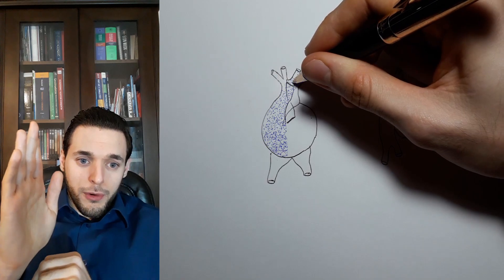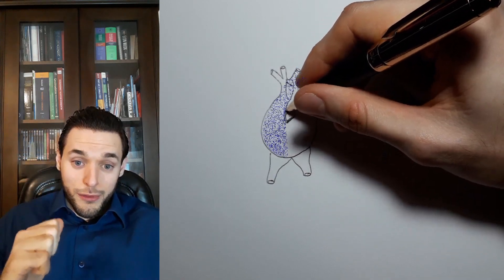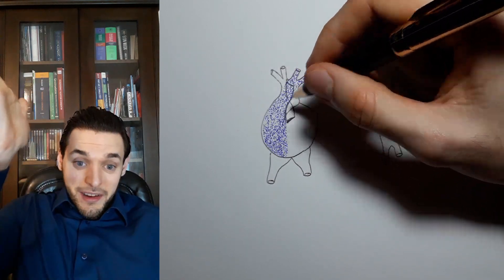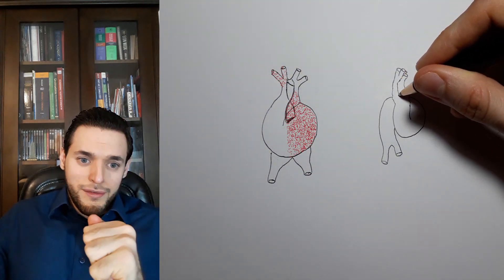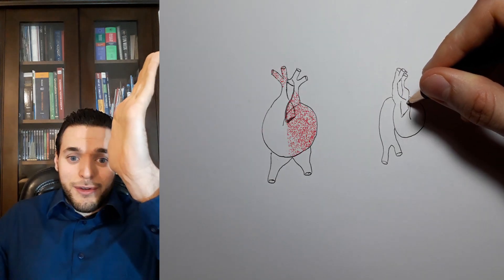The pulmonary trunk is supposed to carry deoxygenated blood from the right ventricle to the lungs, whereas the aorta is supposed to carry oxygenated blood from the left ventricle to the systemic circulation.